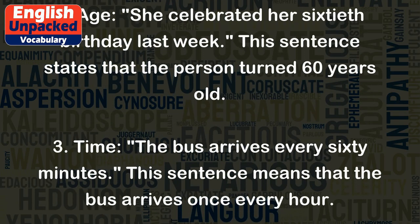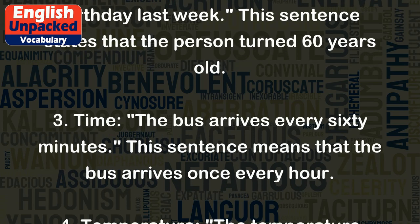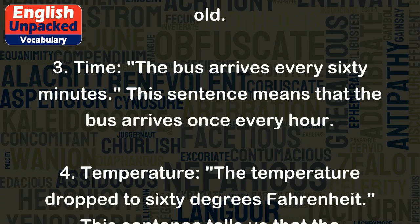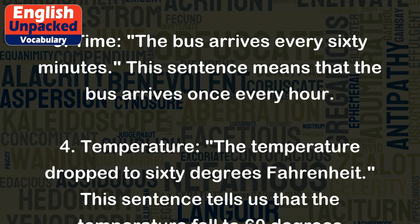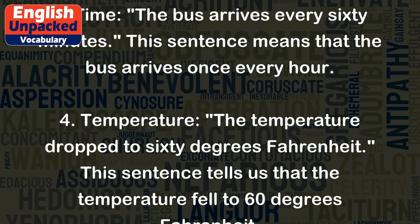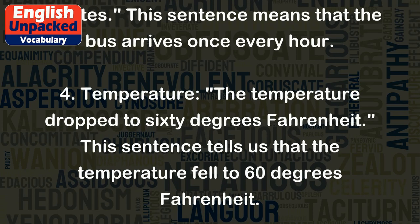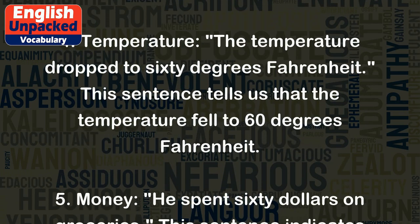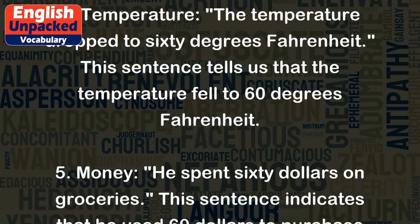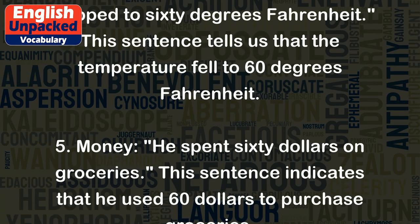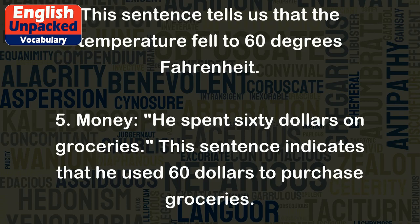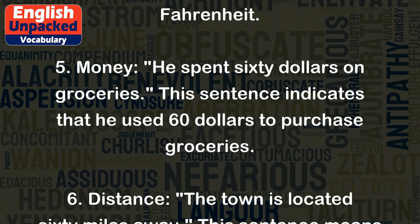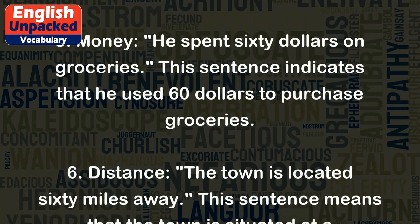3. Time: the bus arrives every 60 minutes — this sentence means that the bus arrives once every hour. 4. Temperature: the temperature dropped to 60 degrees Fahrenheit — this sentence tells us that the temperature fell to 60 degrees Fahrenheit. 5. Money: he spent 60 dollars on groceries — this sentence indicates that he used 60 dollars to purchase groceries.